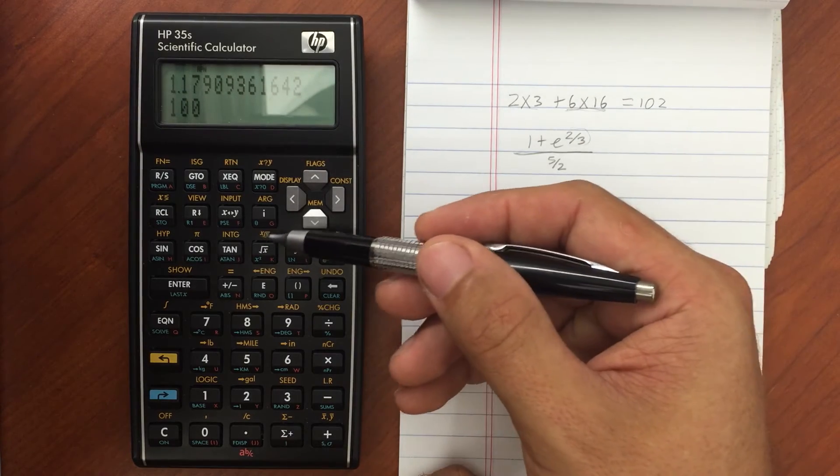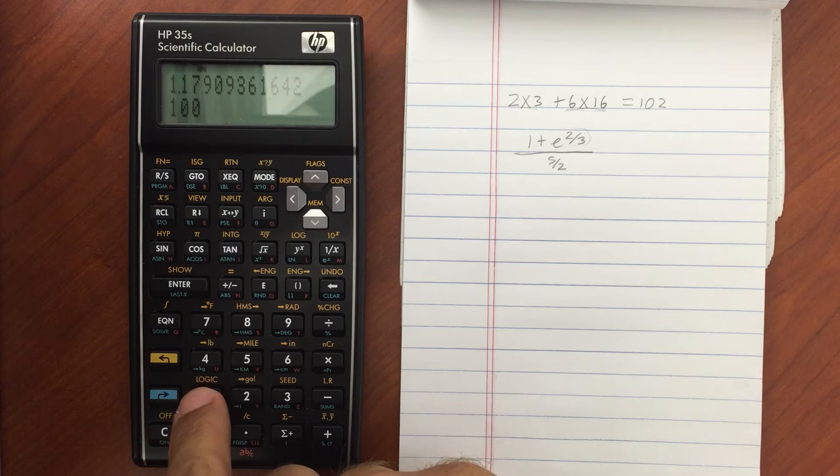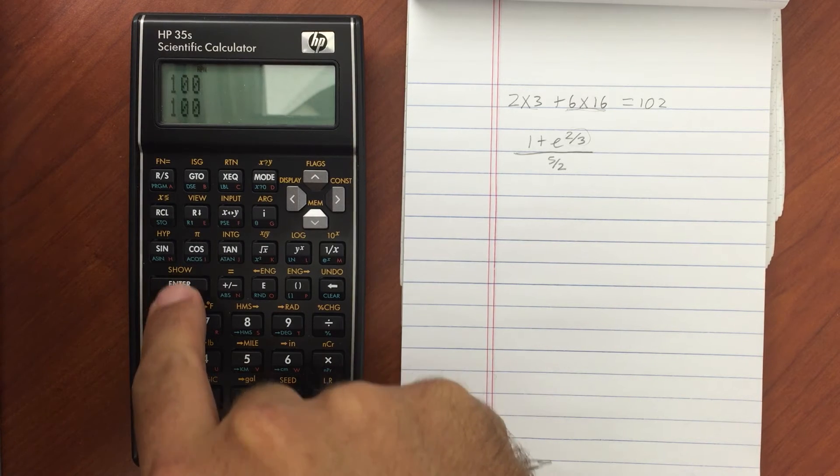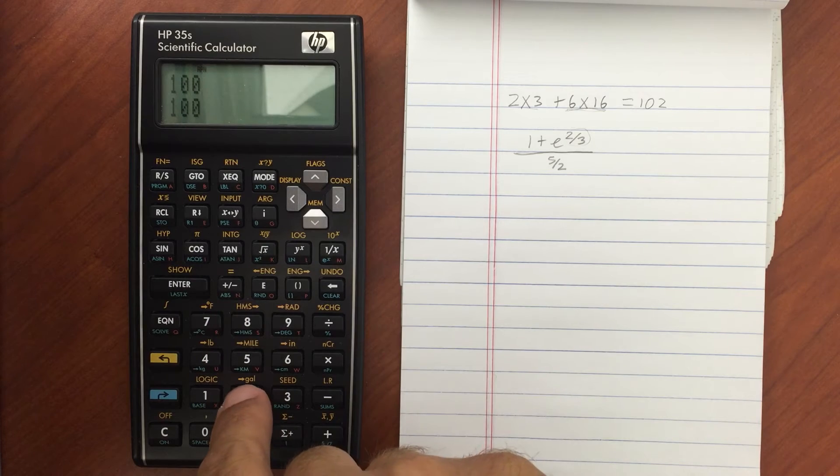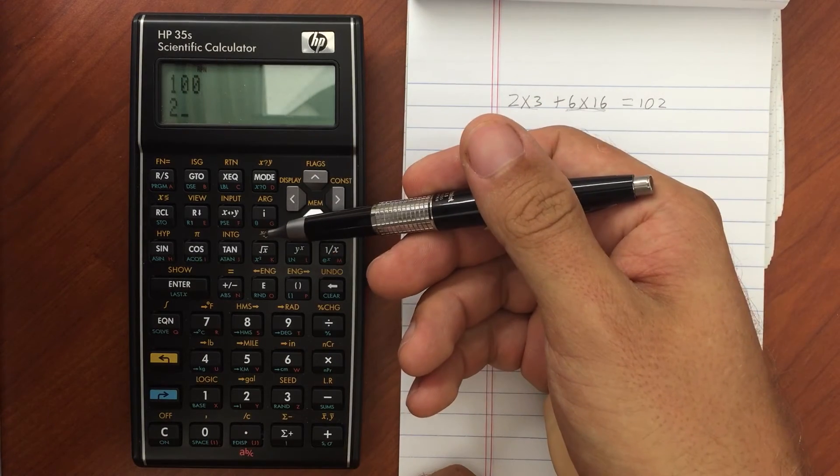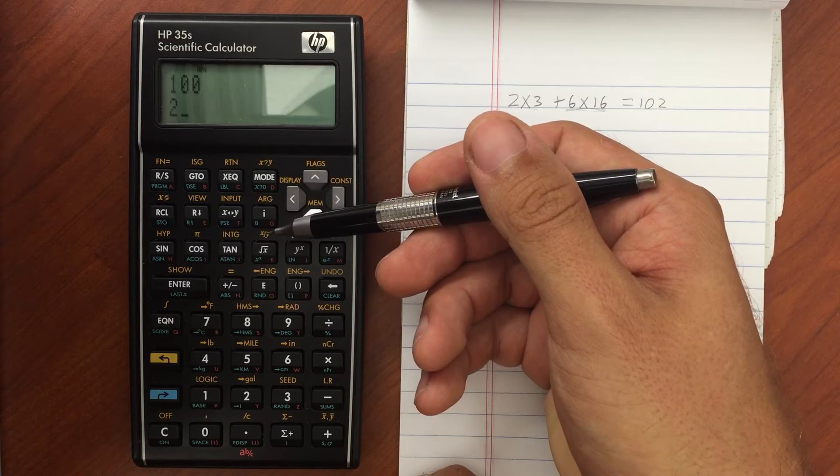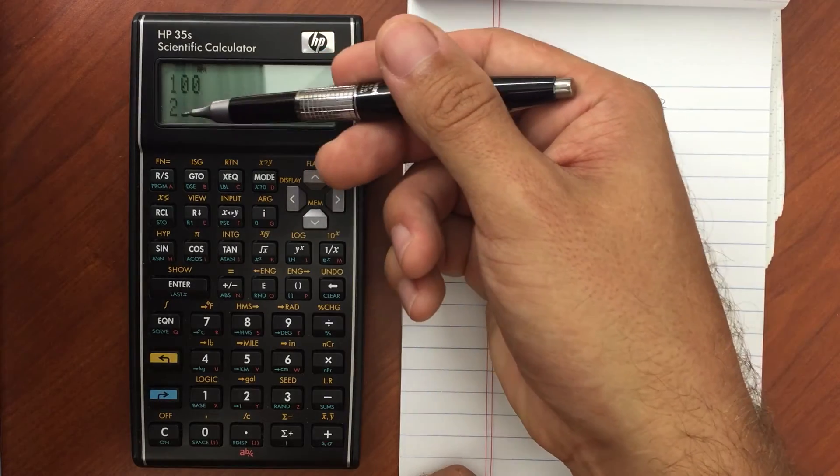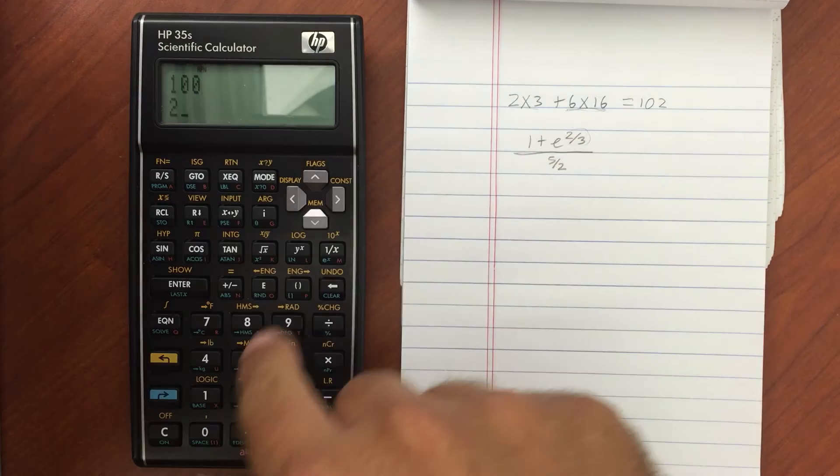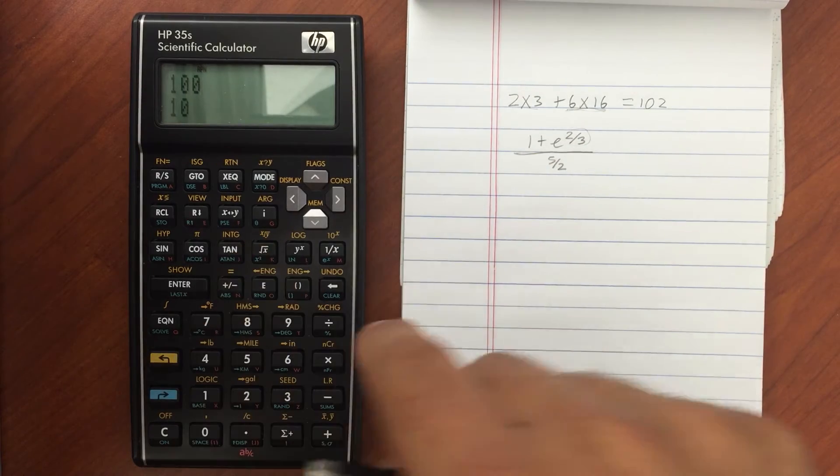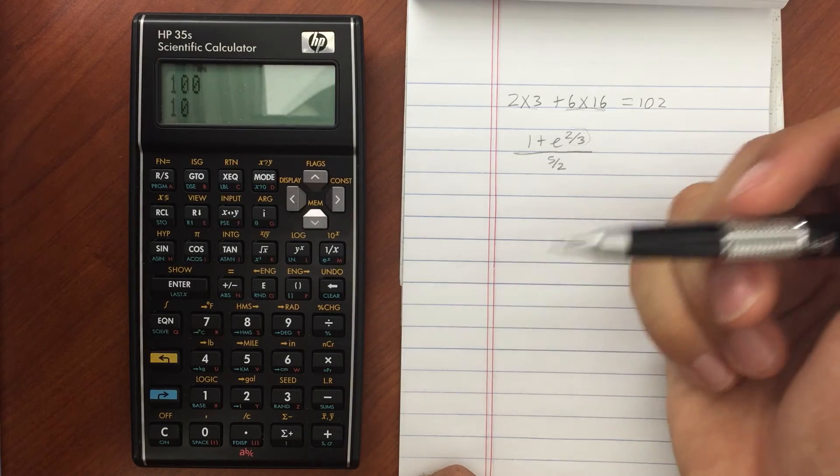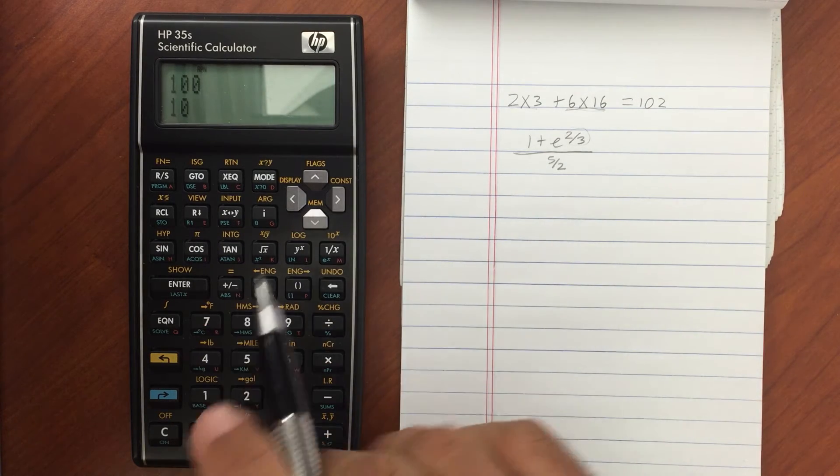Same with square root here. So if I take 100, enter 2. And then take the square root. I'm taking the square root of y. Or the xth root of y. In this case, it is the square root since I entered 2. Gold shift, root 10.